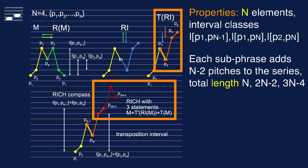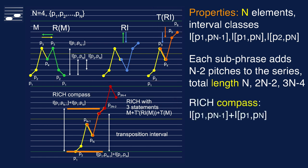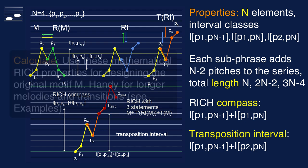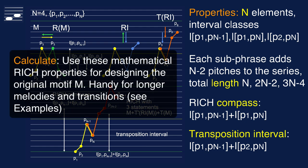Each sub-phrase adds n-2 elements to the series, and therefore after two statements we have 2n-2, after three sub-phrases 3n-4 elements in the chain. After two statements the compass, that is the interval between first and last note is given in this formula. When about to append the third statement, the transposition interval is calculated with this second formula. I'll demonstrate the calculation for most examples in this tutorial, as you will see.